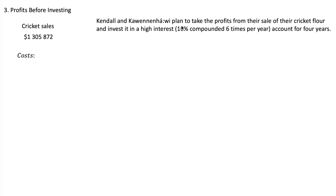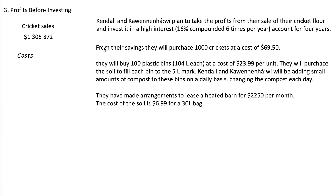Our costs include: 1,000 crickets purchased for $69.50; 100 plastic bins at $23.99 each, totaling $2,399. They will also purchase soil to fill each bin to the 5-liter mark — that's 5 liters times 100 bins, so 500 liters of soil are needed in total.